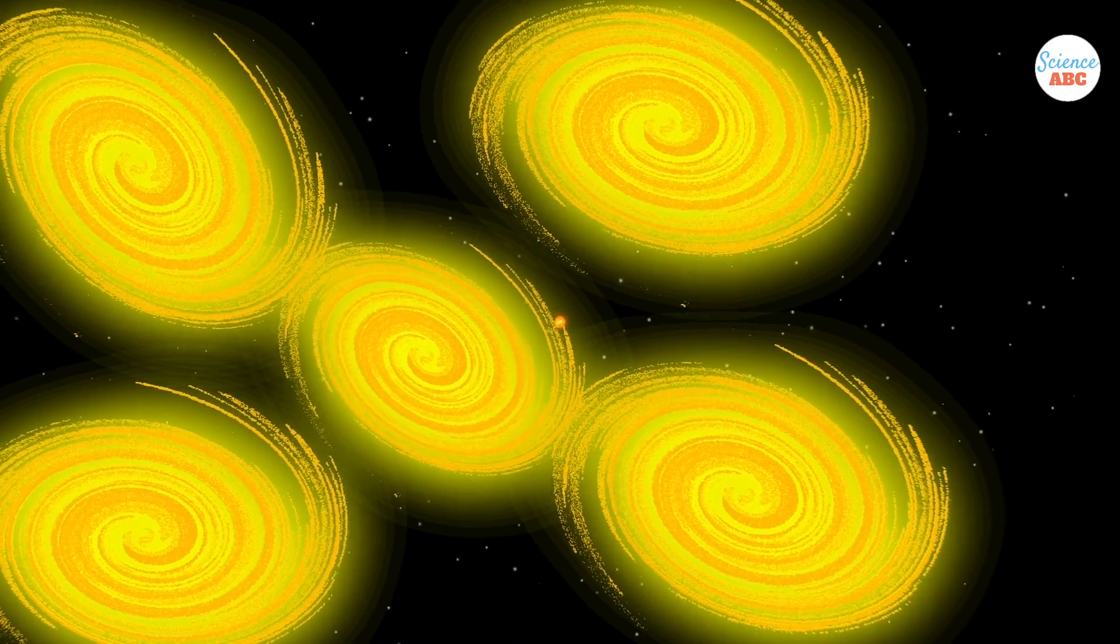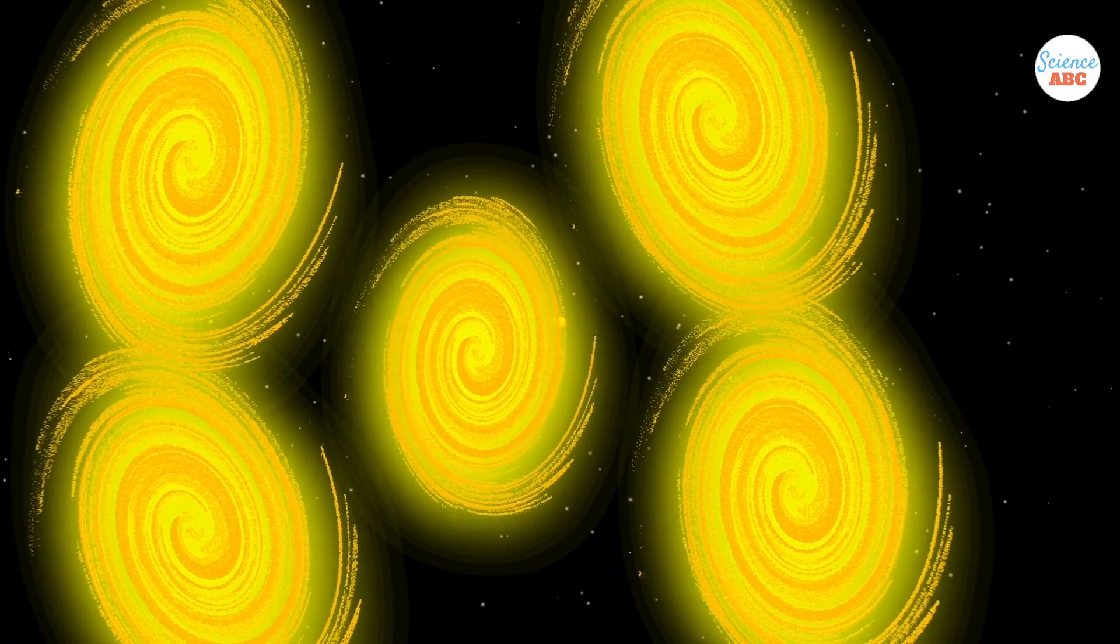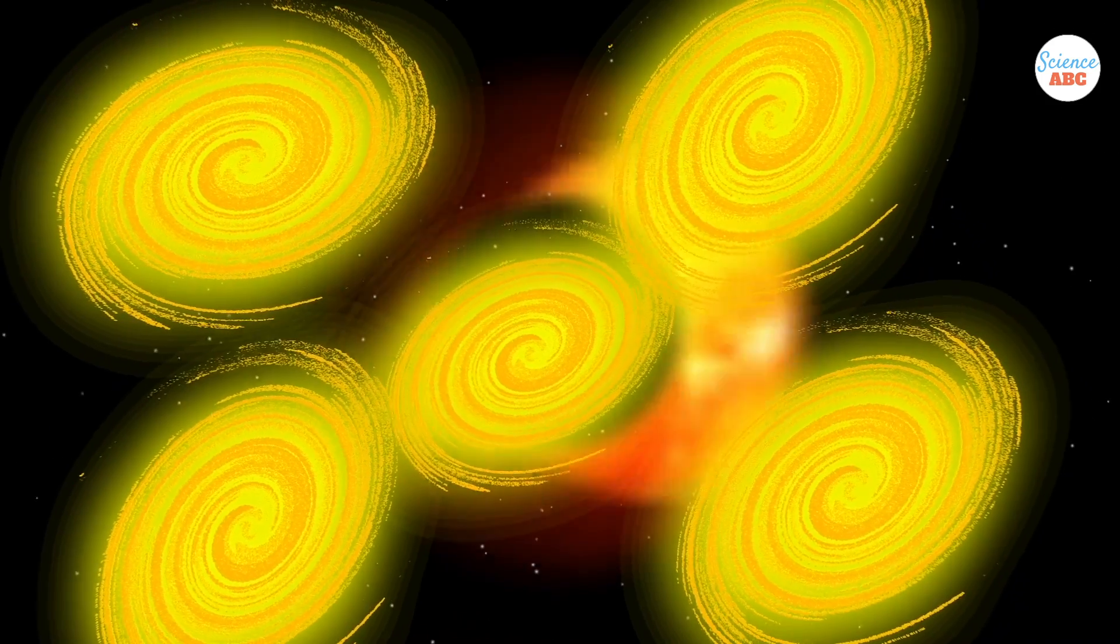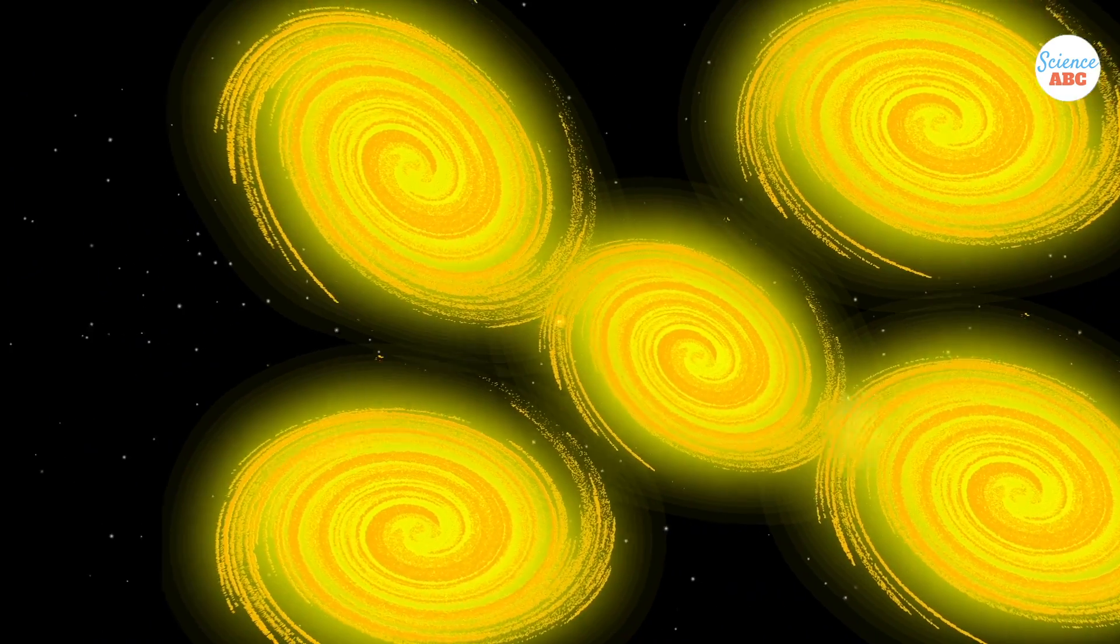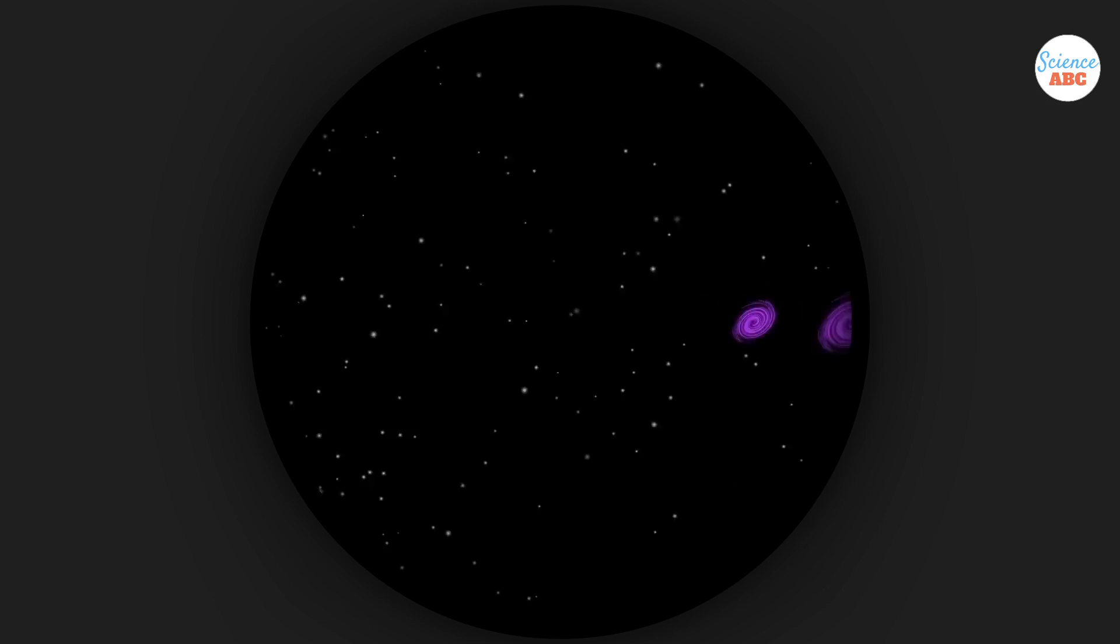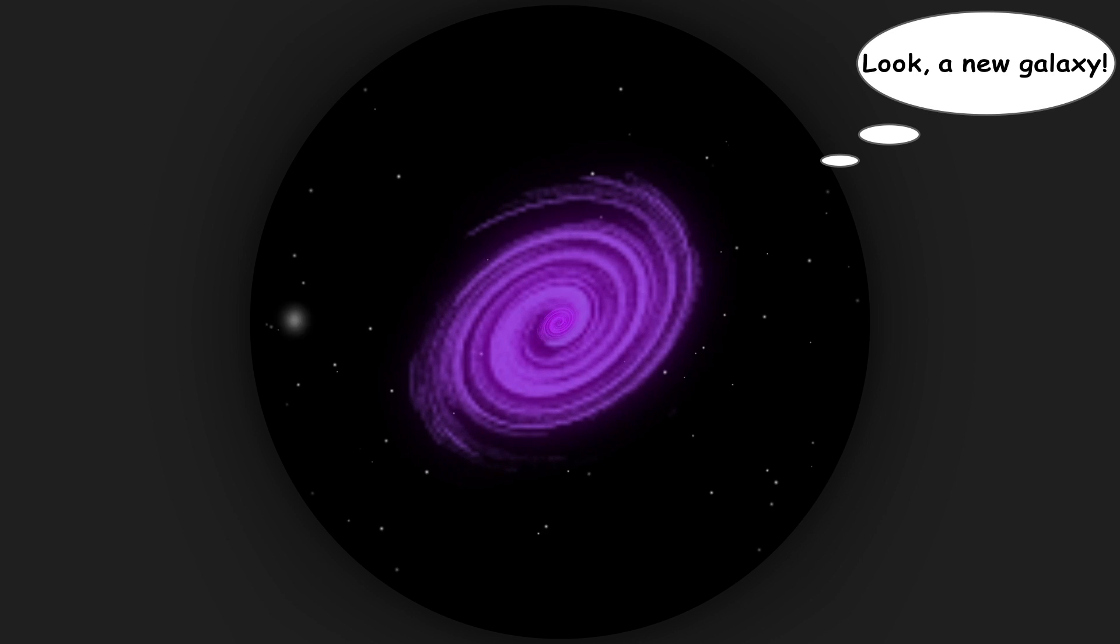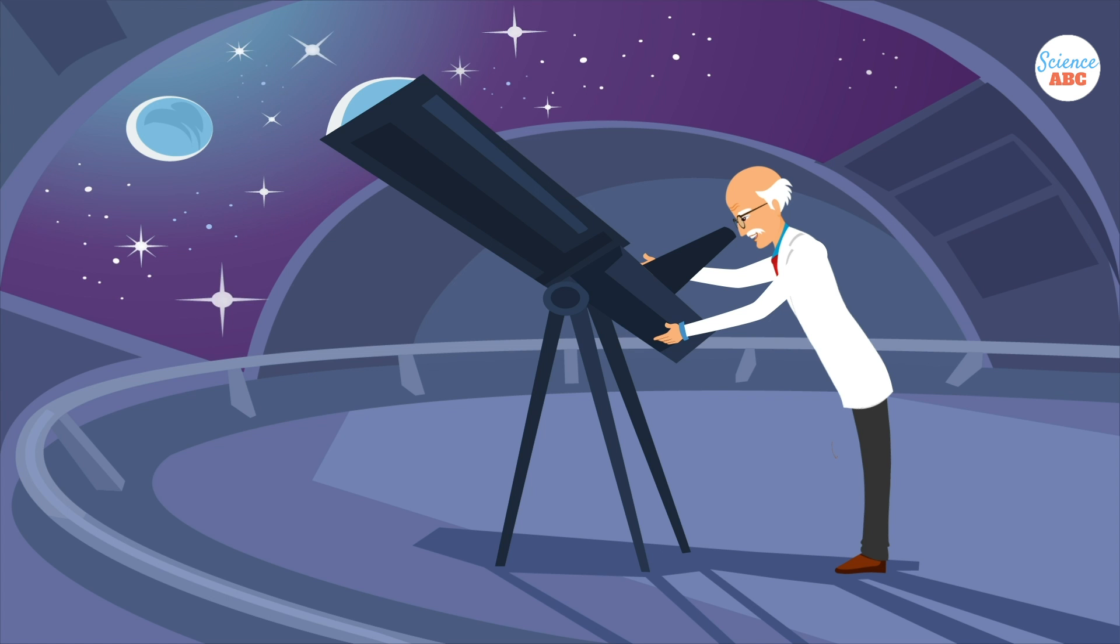Gravitational lensing tends to magnify distant sources that are otherwise blocked by the galaxies in front of them, although the view is often distorted. In a way, gravitational lensing is akin to peering through a gigantic telescope.